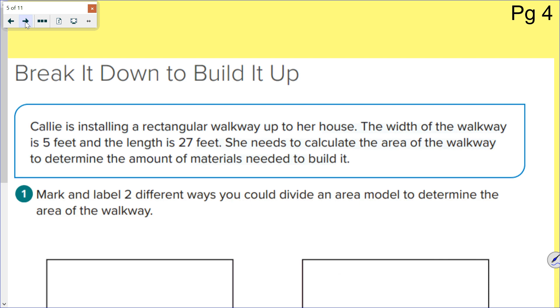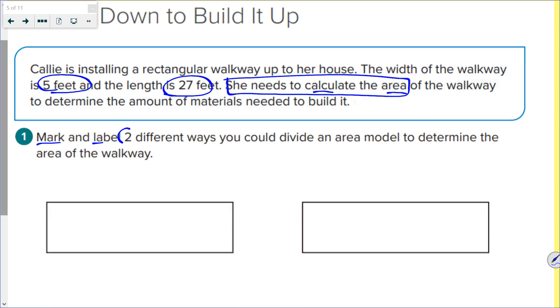Let's break it down to build it up. Cally is installing a rectangular walkway up to her house. The width of the walkway is 5 feet and the length is 27 feet. This is called marking your text. I highly recommend you get used to doing it. She needs to calculate the area of the walkway to determine the amount of materials needed to build it. So here's what we need to do. Mark and label two different ways you could divide an area model to determine the area of the walkway.